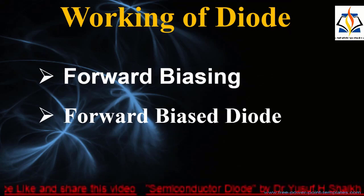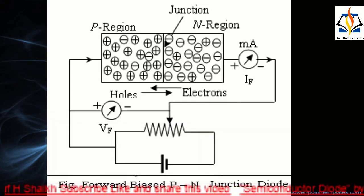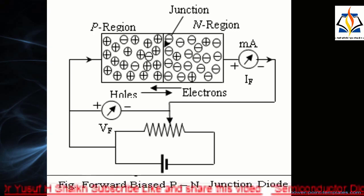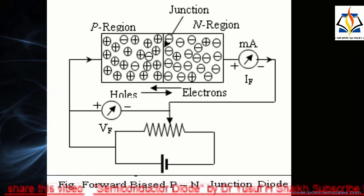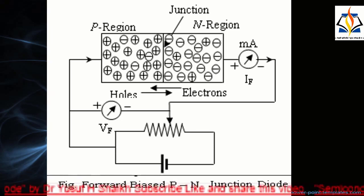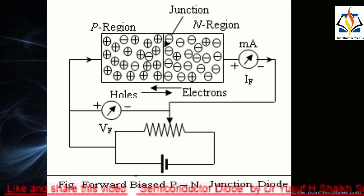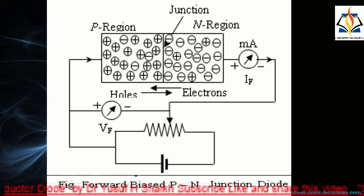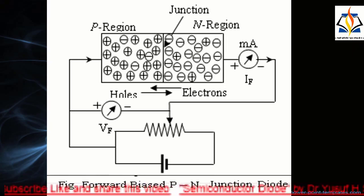When the p-region is connected to the positive terminal and the n-region to the negative terminal of a battery, the junction diode is said to be forward biased, as shown in the figure. Forward bias is the condition that allows current to flow through the p-n junction. The forward bias potential acts in opposition to the barrier potential.